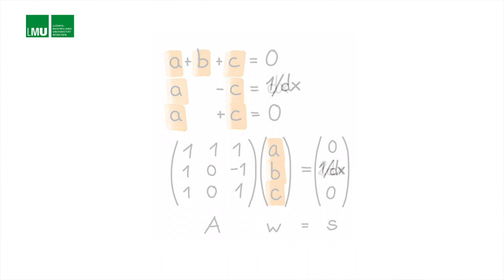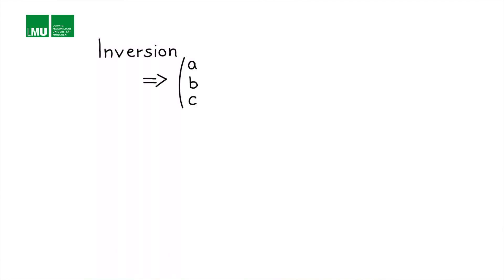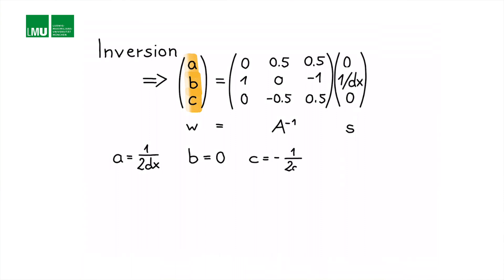So this can be simply inverted by matrix inversion scheme to obtain the coefficients a, b, c and a in that case is 1 over 2 dx, b equals 0 and c equals minus 1 over 2 dx.